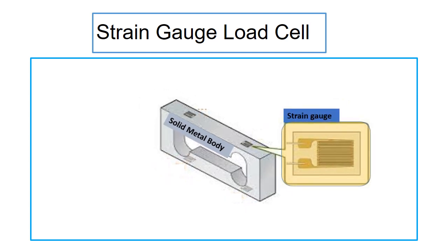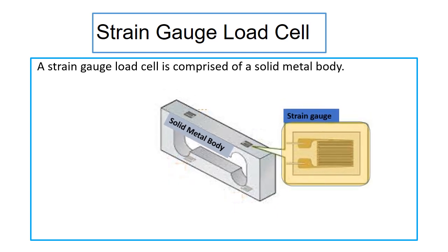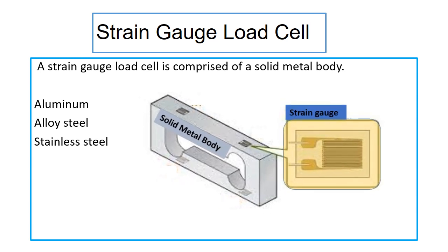A strain gauge load cell is comprised of a solid metal body or spring element on which a strain gauge has been secured. This body is usually made of aluminum, alloy steel, or stainless steel, which makes it very sturdy, but this body must be minimally elastic.